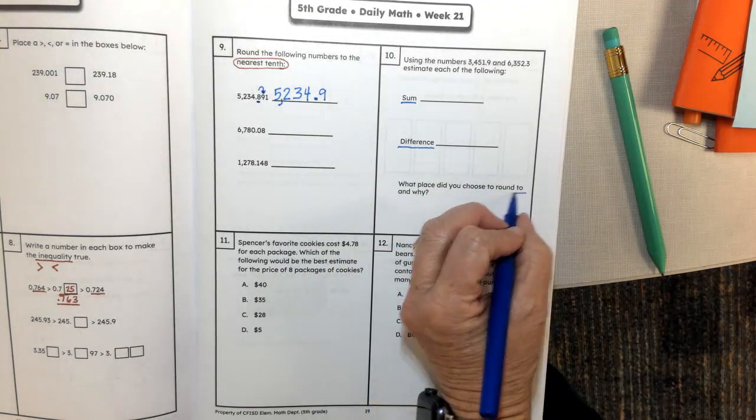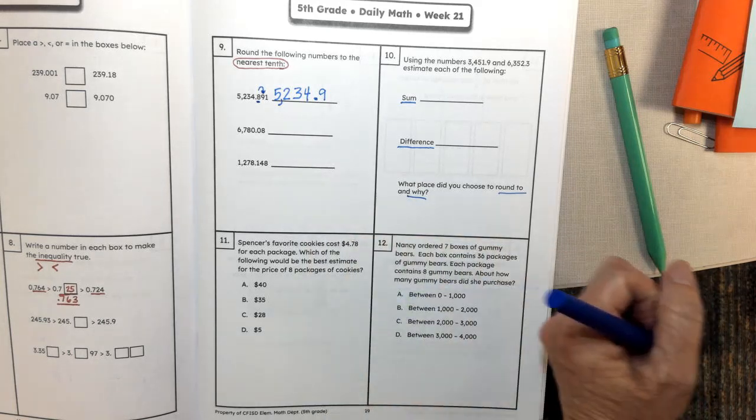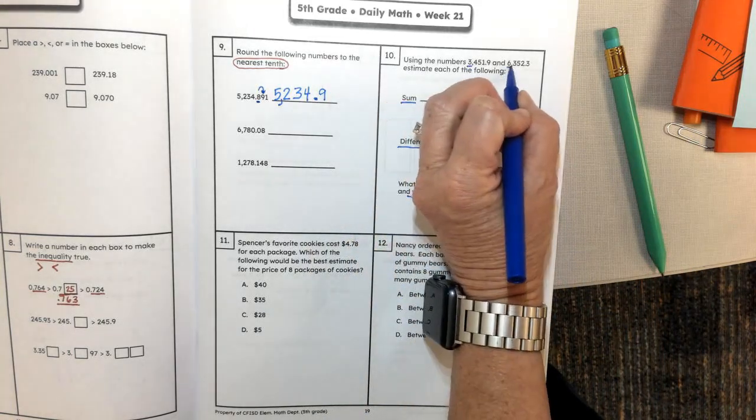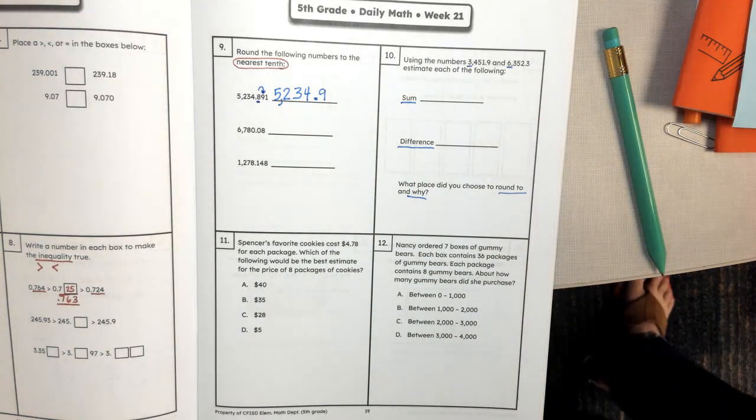Which place did you choose to round to? Probably the easiest estimate is going to be the leading digit, so I would estimate to the nearest thousand.